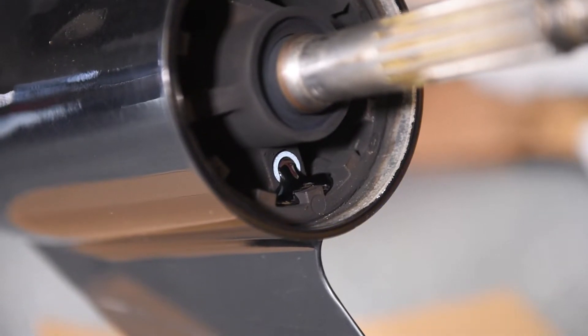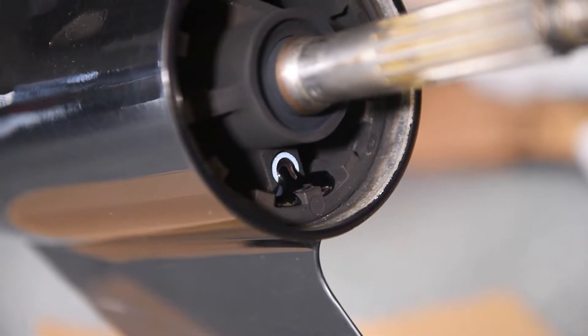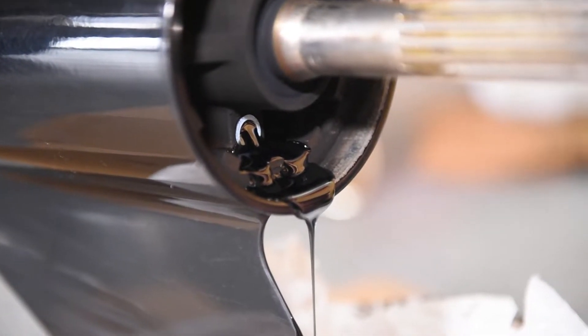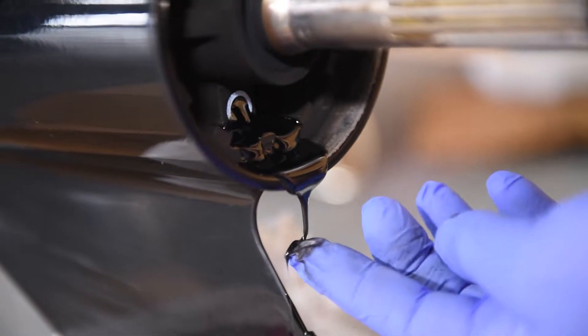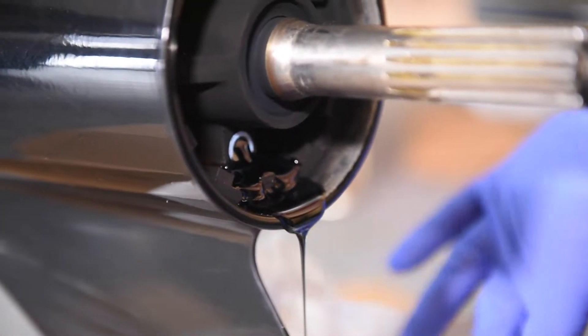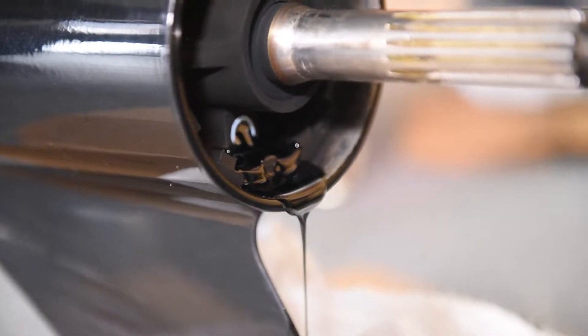We'll go ahead and trim the motor down and start catching that into our catch can. You just want to kind of look at the color and make sure it's not milky. If it's milky colored, you might have a water issue. But this looks pretty good—there's no milkiness, it's definitely used but it's not milky.